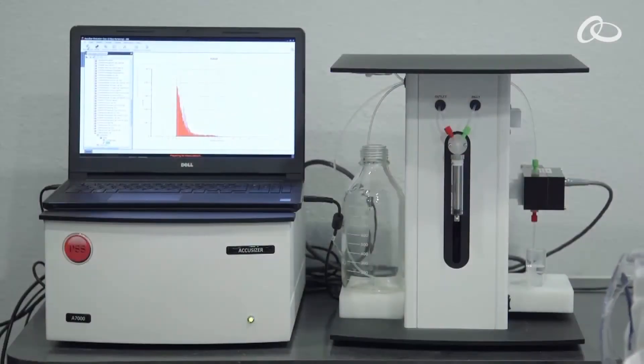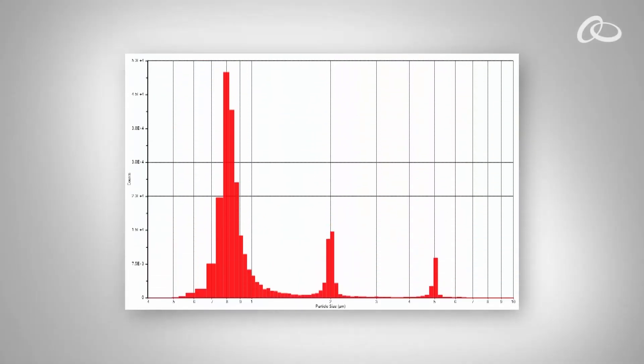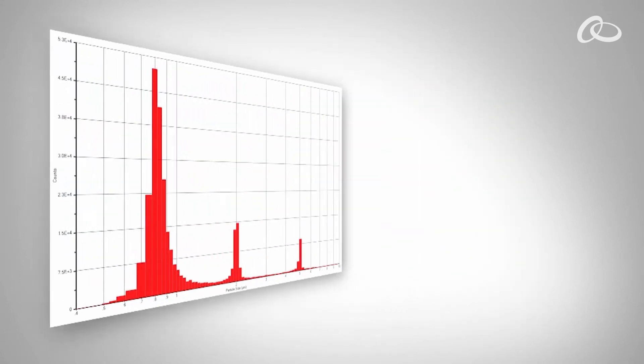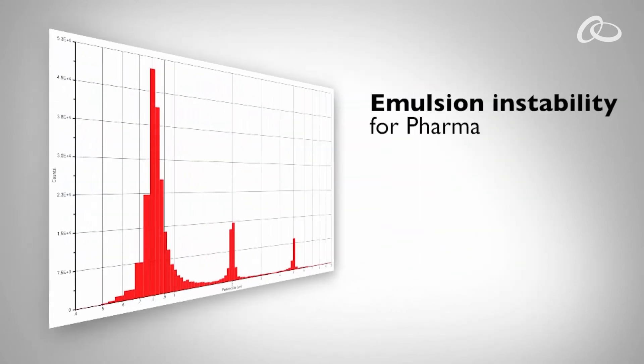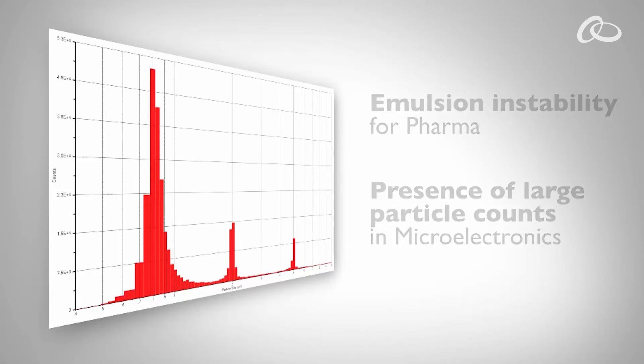The AccuSizer has the highest sensitivity of any technique for detecting tails of distributions outside of the main population. These large particle tails can indicate emulsion instability in the pharmaceutical industry, or the presence of large particle counts that scratch wafers and reduce yields in the microelectronics industry.